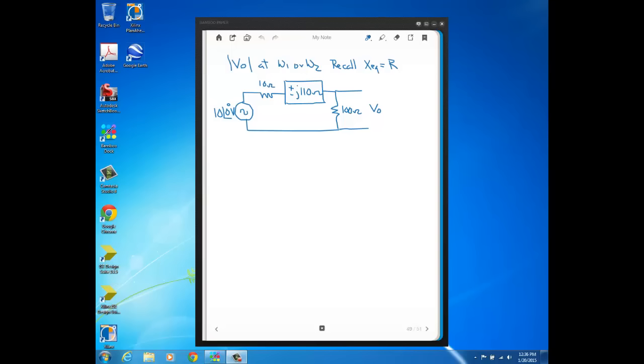Alright, this is the second part of the series bandpass filter example that we started in the previous video. We're going to start this video with finding the magnitude of Vout at either one of the half power frequencies or cutoff frequencies, omega 1 or omega 2. Because remember that at either of these two frequencies we only achieve this equality that the equivalent reactance, which is XL minus XC, is equal to the resistance in the circuit.